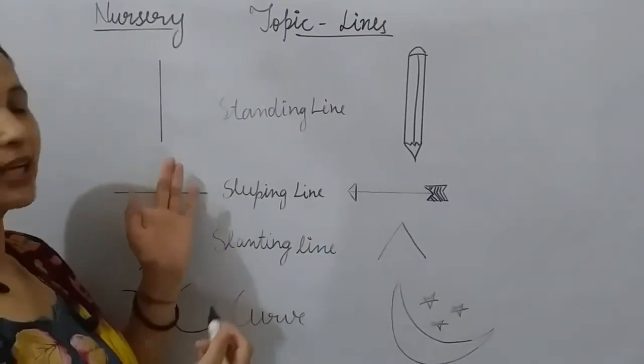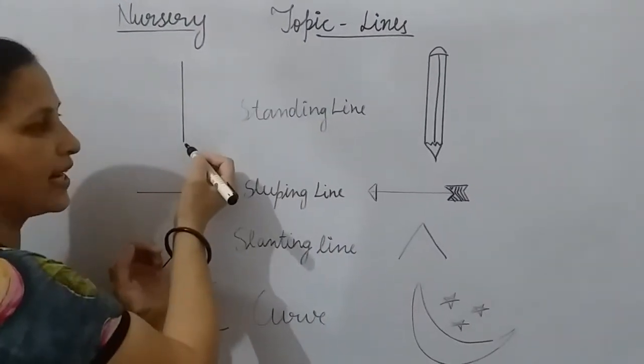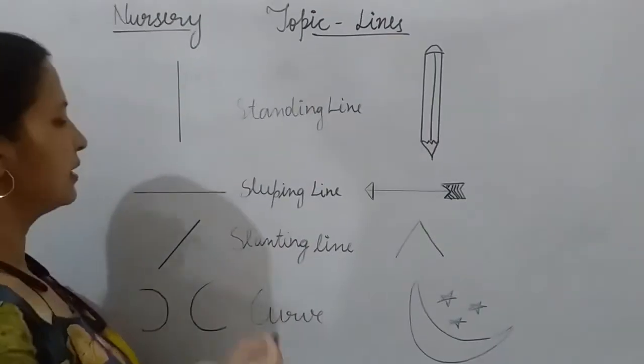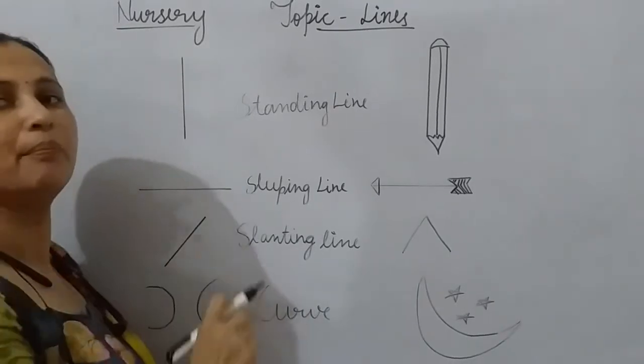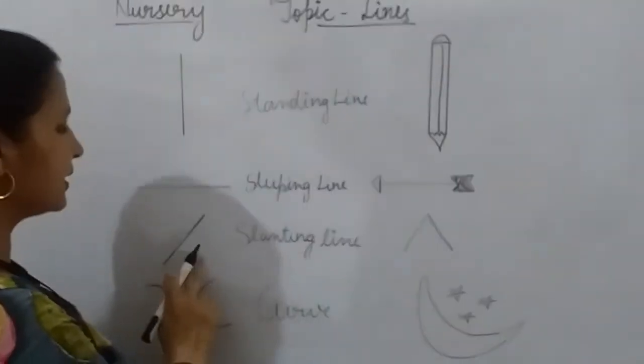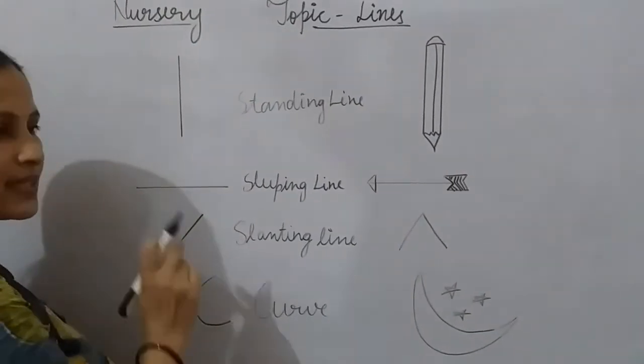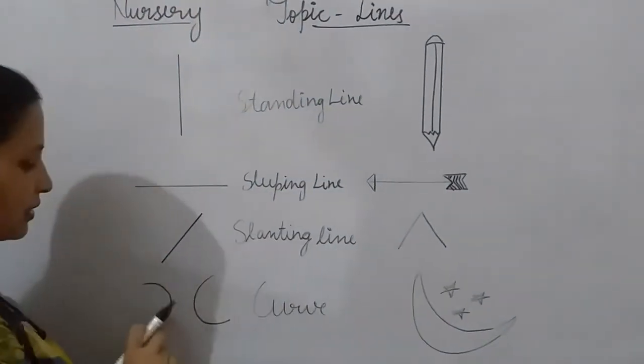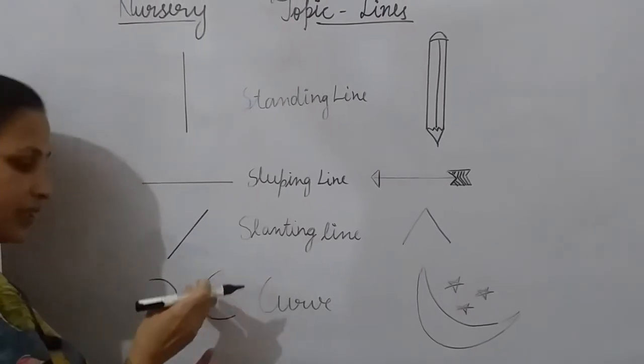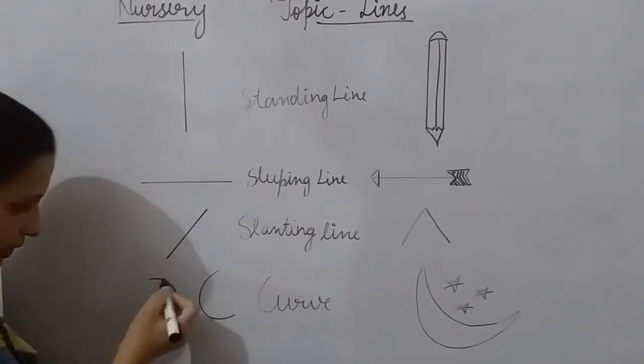The first one is standing line. The second one is sleeping. Slanting line is slanting and curve. Curves can be both here and here.